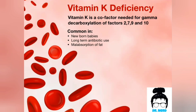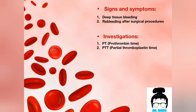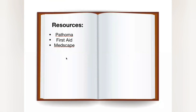One last point under investigations: we usually monitor anticoagulants. Whenever we give a patient an anticoagulant, we monitor it through BT and BTT — BT is usually used to monitor warfarin, and BTT is usually used to monitor heparin. And that's the end of our discussion about bleeding disorders.